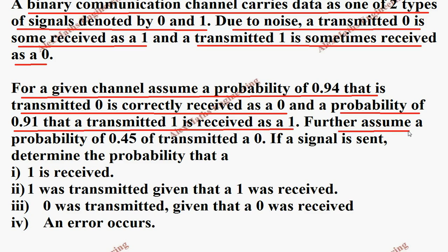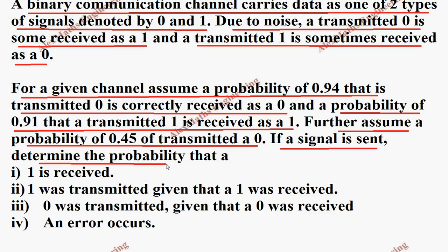Further, assume a probability of 0.45 of transmitting a 0. If a signal is sent, determine the probability — they ask a few subdivisions.